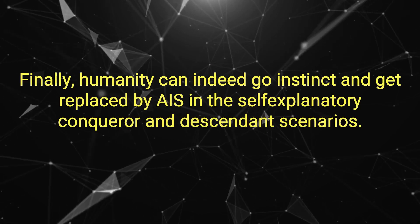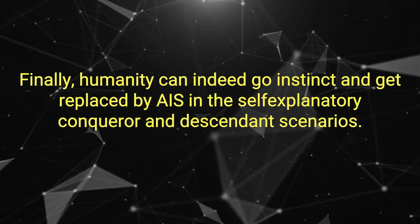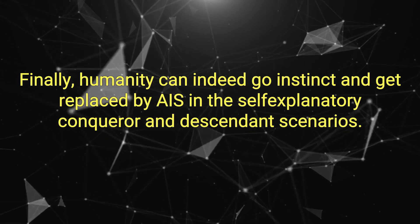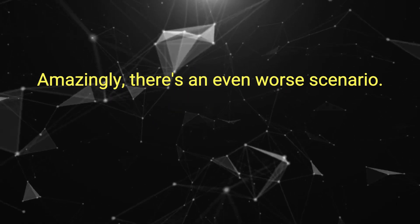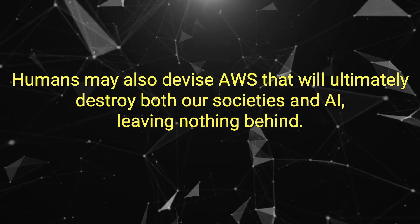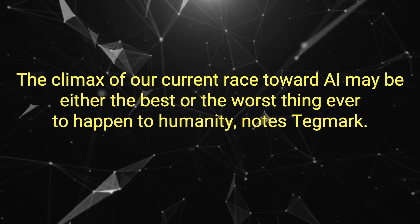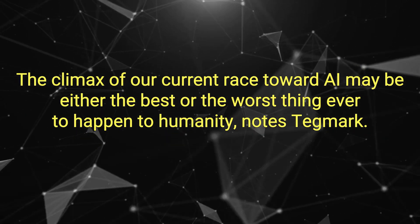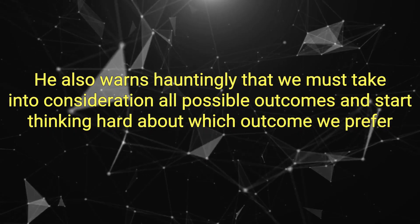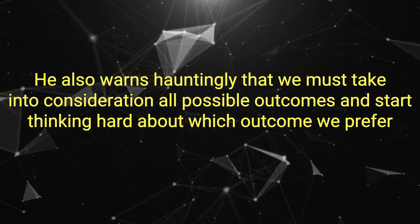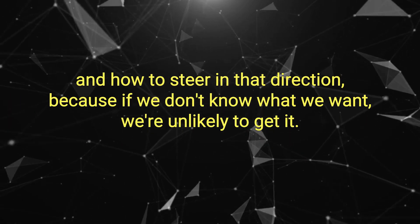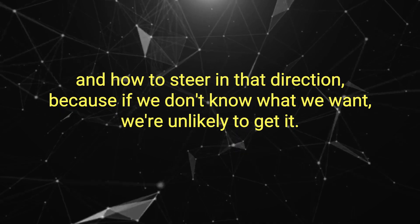The end of humanity: Finally, humanity can indeed go extinct and get replaced by AIs in the self-explanatory conqueror and descendant scenarios. Amazingly, there's an even worse scenario. Humans may also devise AWS that will ultimately destroy both our societies and AI, leaving nothing behind. The climax of our current race toward AI may be either the best or the worst thing ever to happen to humanity, notes Tegmark. He also warns hauntingly that we must take into consideration all possible outcomes and start thinking hard about which outcome we prefer and how to steer in that direction, because if we don't know what we want, we're unlikely to get it.